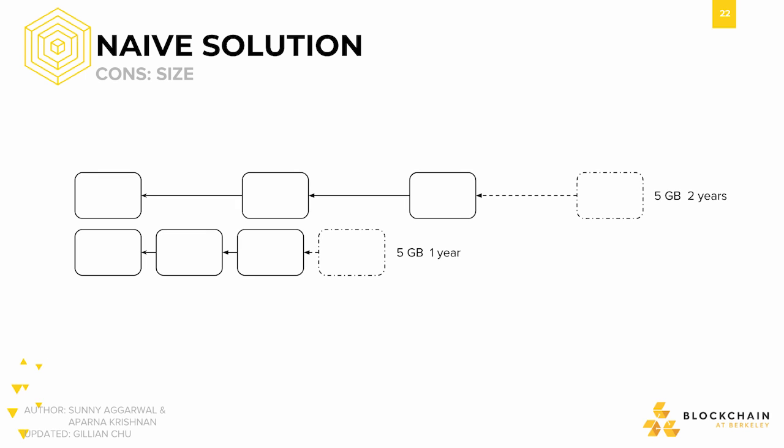Decreasing block time means that the blockchain will grow faster as well. For example, if normally our blockchain system has a size of 5GB after 2 years, and we halve the block time, then it would only take one year to reach the same size, since we're producing blocks twice as fast.